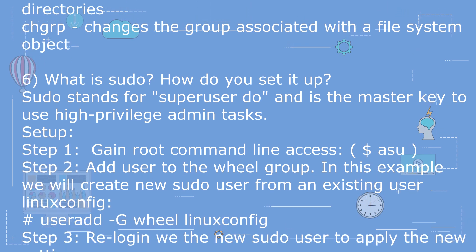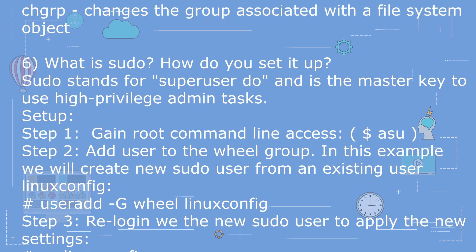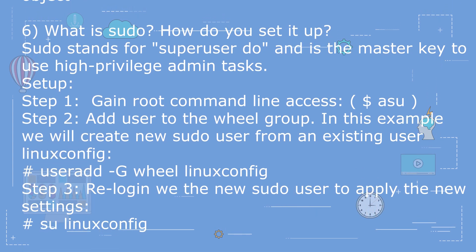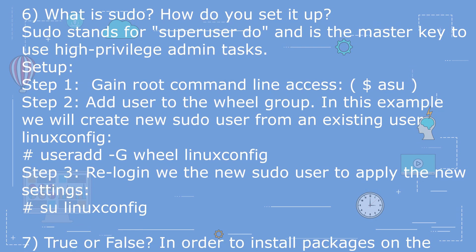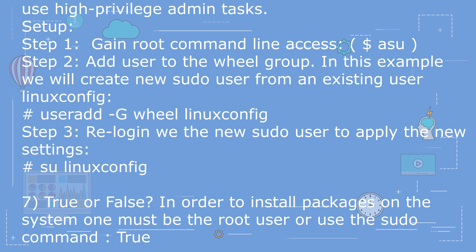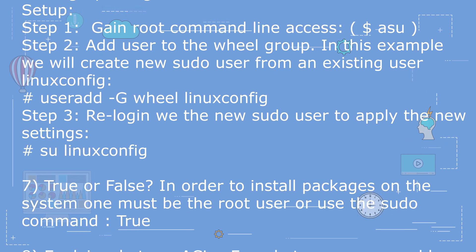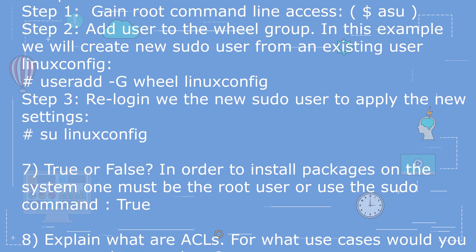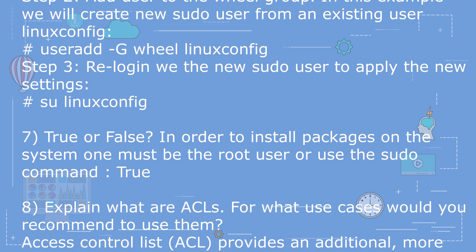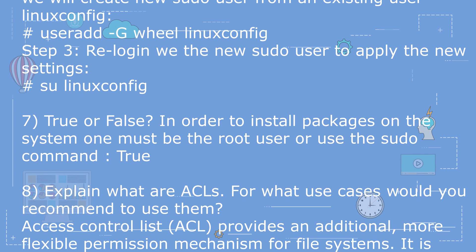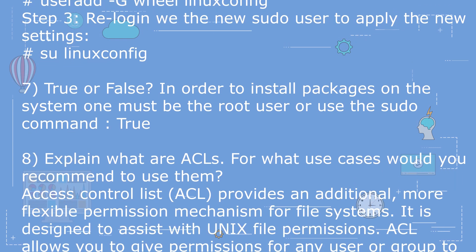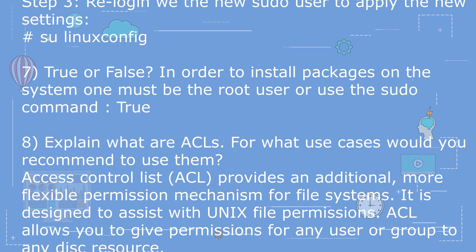Question 7: What is sudo? How do you set it up? sudo stands for super user do and is the master key to use high-privilege admin tasks. Setup: Step 1 — gain root command line access. Step 2 — add user to the wheel group; for example, create a new sudo user from an existing user: usermod -g wheel linuxconfig. Step 3 — relog in with the new sudo user to apply the new settings: su linuxconfig.